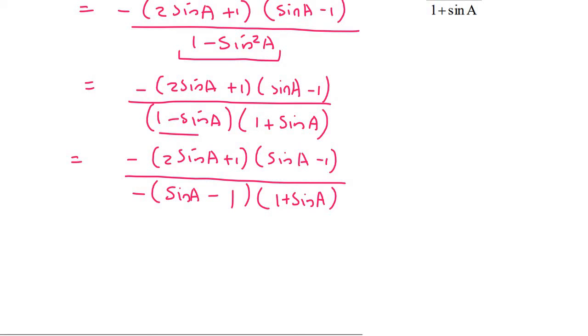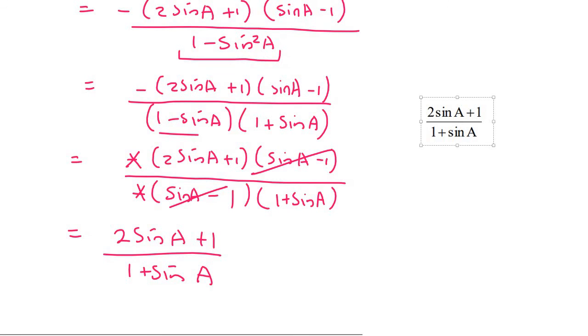And now all of a sudden, these cancel. Even the negatives can cancel out. That's quite nice. And so we're left with two sin a plus one. And then at the bottom, we have one plus sin a. And that's exactly what we're trying to get. So we can say, therefore, the left-hand side is the same as the right-hand side.